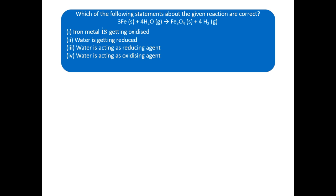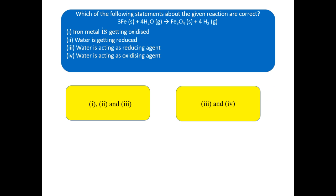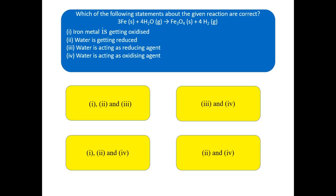Which of the following statements about the given reaction are correct? You can see the reaction on your screen along with the statements. Statement one: iron metal is getting oxidized — correct. Statement two: water is getting reduced — correct. Statement three: water is acting as a reducing agent — correct. Statement four: water is acting as an oxidizing agent. Options: statements one, two and three are correct; three and four are correct; one, two and four are correct; or two and four are correct. Choose the right answer — this question is most important for your exam.